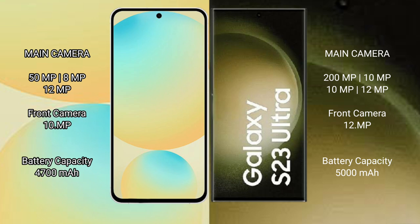Samsung Galaxy S23 Ultra has a rear quad camera setup: 200MP plus 10MP plus 10MP plus 12MP. Front camera is 12MP.